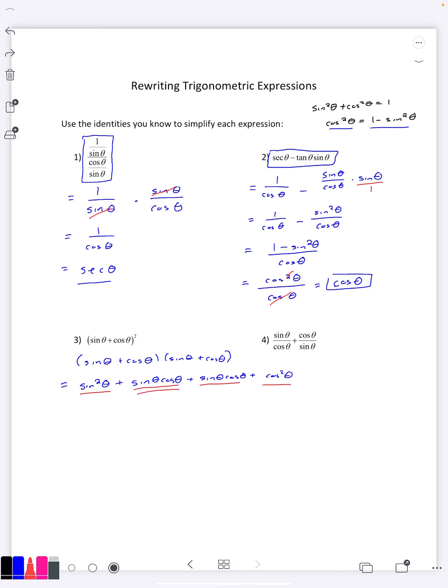We can also combine together sine theta cosine theta because they're like terms, so we're going to get one plus two sine theta cosine theta, and that would be our simpler way of writing that expression.